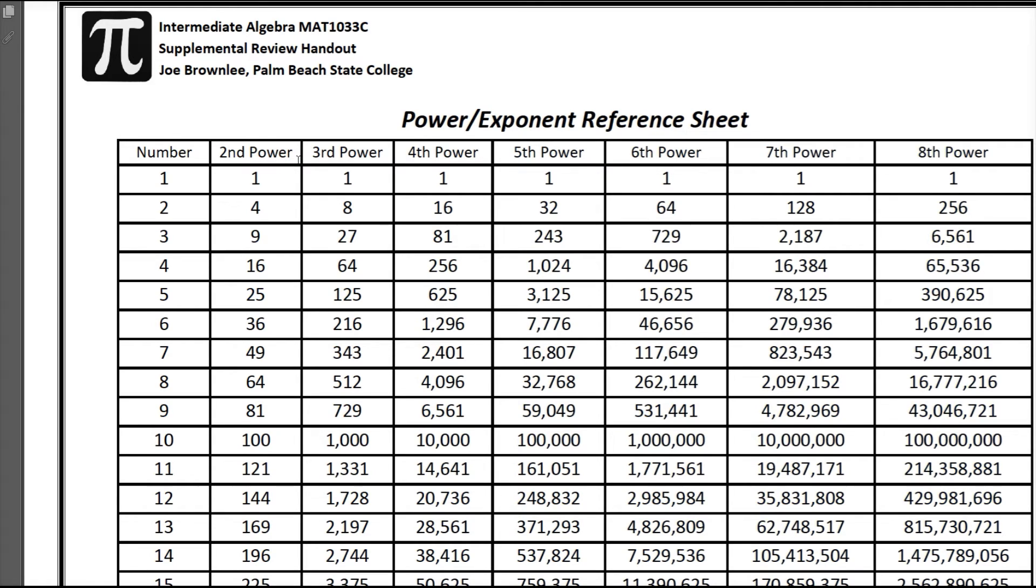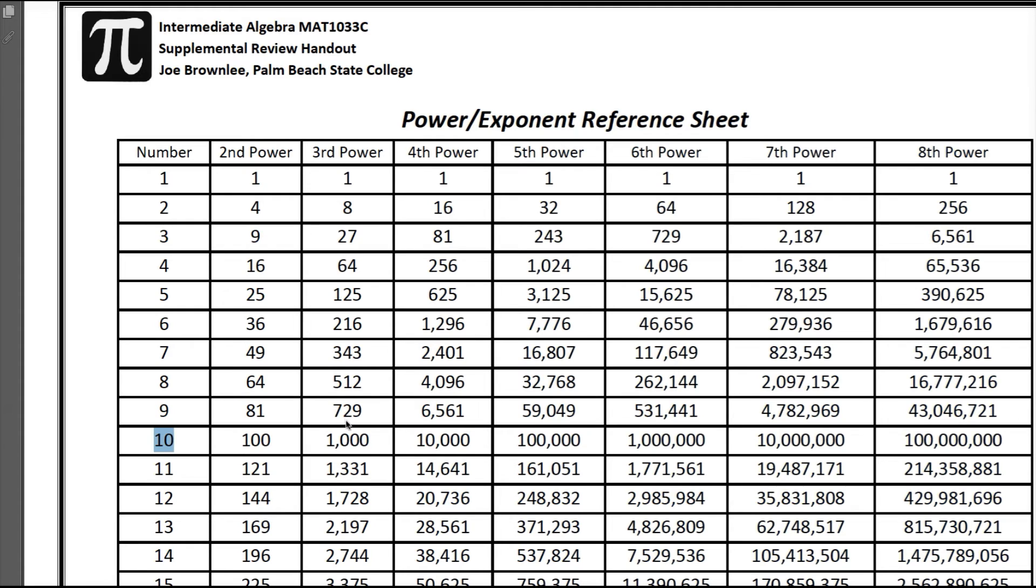We're dealing with the third index, a cube root, so go to the third power column and look down until you see 1,000. There it is. Go over to the left and that tells you what number to the third power gives you 1,000. It's 10, so 10 to the third power gives us 1,000.